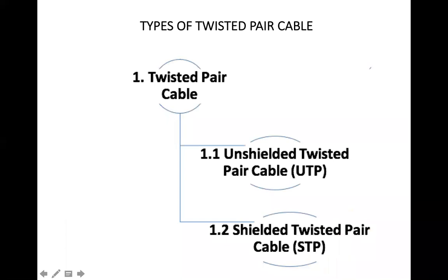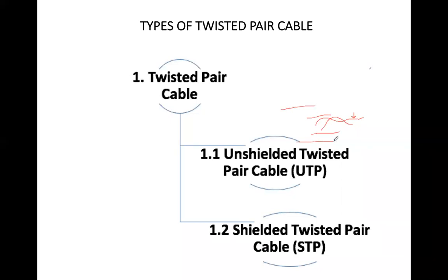Twisted pair cable can be of two types: unshielded twisted pair (UTP) and shielded twisted pair (STP). In shielded twisted pair cable, you have one more protection layer — copper conductor, then insulator, then a jacket, then an outer jacket. This extra insulation layer reduces the effect of noise. In unshielded twisted pair, there is no extra layer of protection, so the effect of noise is more.